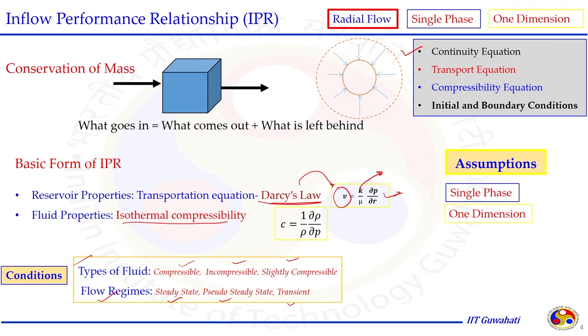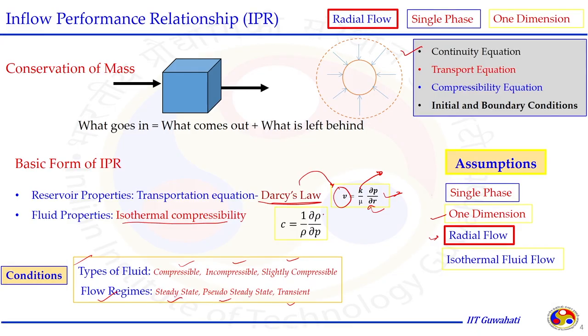The assumptions taken so far are: single phase — only single phase fluid is present, so the permeability K is for a single phase fluid flowing through porous media. We take only a one-dimensional model where Darcy law is written only for the r direction — the fluid is flowing only in the r direction, though there is a possibility of flow in other directions.